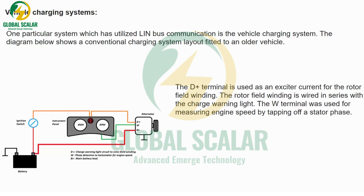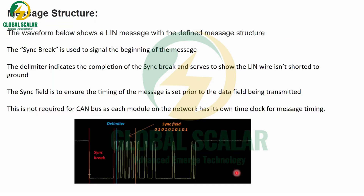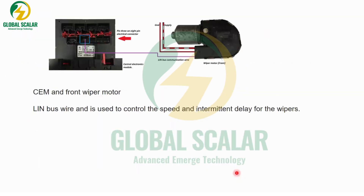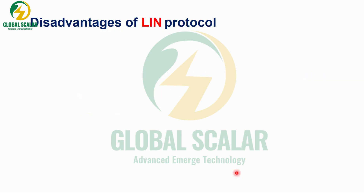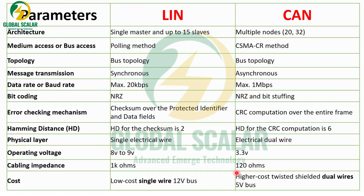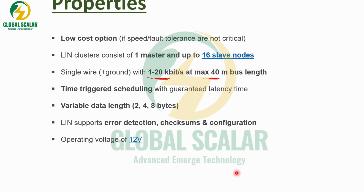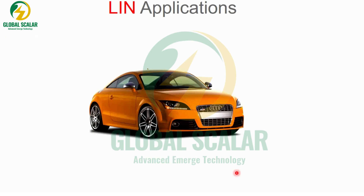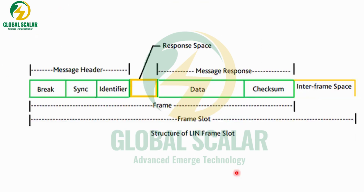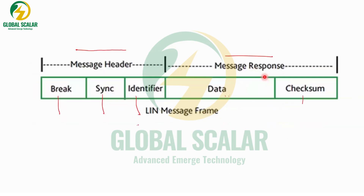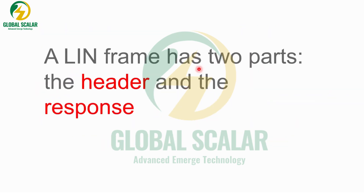In summary, this covers the LIN protocol — its properties, applications, and frame structure. The frame has a header and a response. The break and sync fields must be identified before data is transferred. There is no CRC in LIN — only a checksum field. The message header and message response together form the complete LIN frame overview.